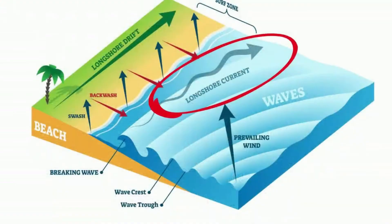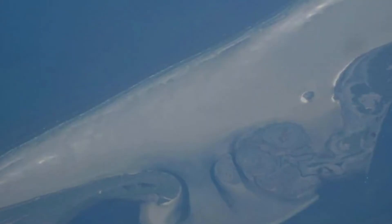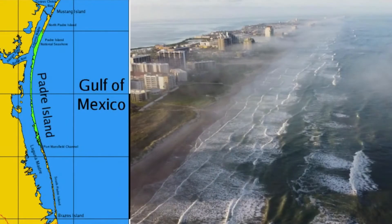Longshore currents transport and deposit this material. A longshore current is the result of how the waves strike the beach. Most waves approach the beach at a slight angle and retreat perpendicular, creating longshore currents that move in a direction parallel to the shore. These longshore currents can transport and deposit materials offshore and may, over a period of time, create a landform offshore like a barrier island. The longest barrier island in the world is Padre Island of Texas, and it is 113 miles.